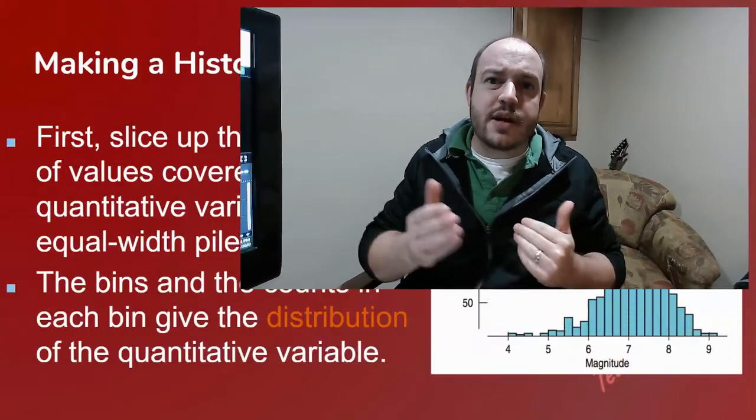Since we're dealing with quantitative data we start off with a giant list of numbers. Obviously looking at a large list of numbers is not very helpful. We can't really see any patterns or any unusual features about the data. Instead we need to represent it visually. That's where a histogram comes into play.